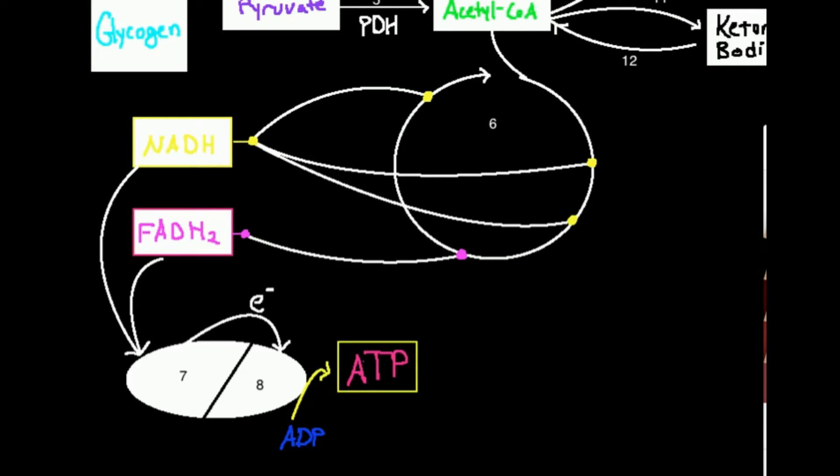Two coenzymes that are high energy that carry electrons. They're going to carry electrons to something right here, seven. Seven, which is the electron transport chain. The electron transport chain takes those electrons off in order to power number eight, which is called ATP synthase.